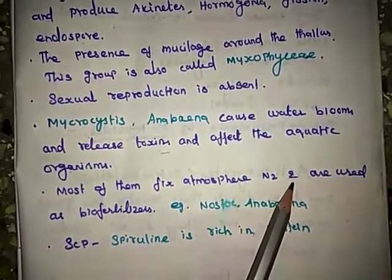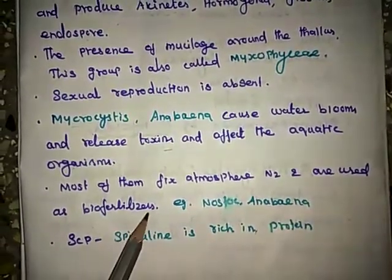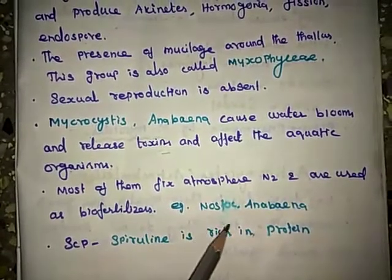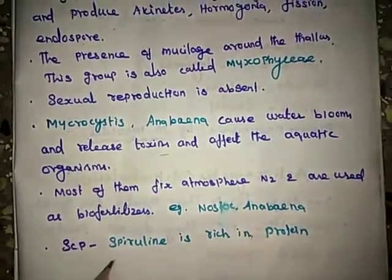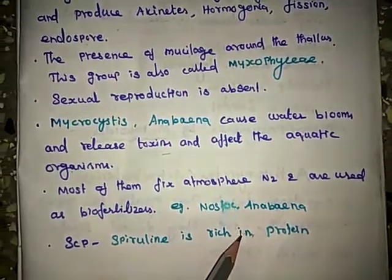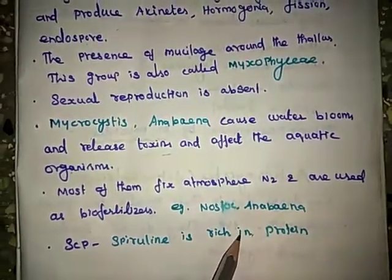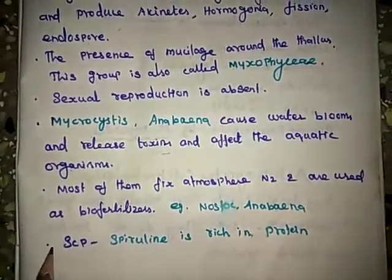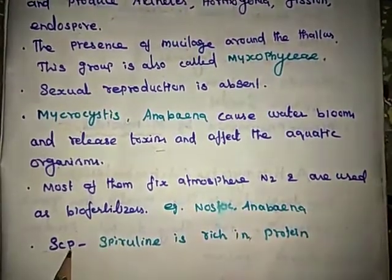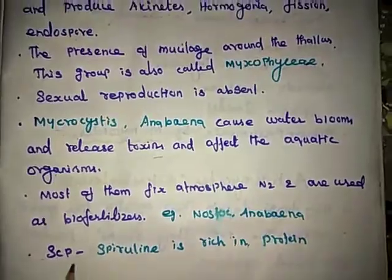Examples of nitrogen-fixing Cyanobacteria used as biofertilizers include Nostoc and Anabaena. Spirulina is rich in protein and hence is called Single Cell Protein, and it is derived from Spirulina.